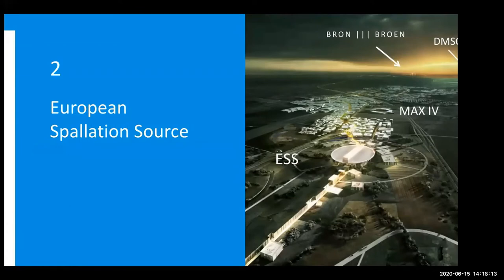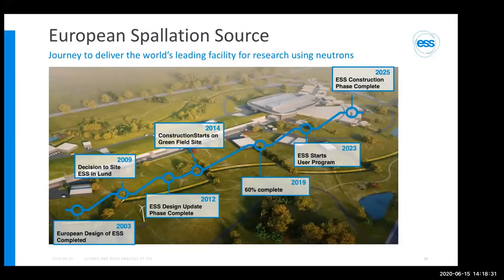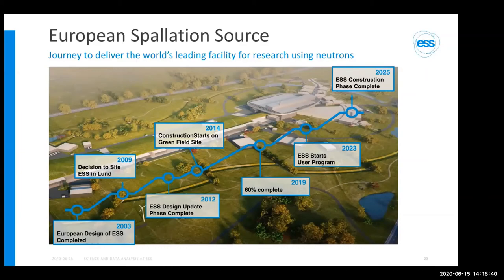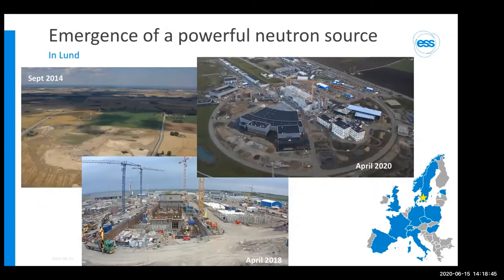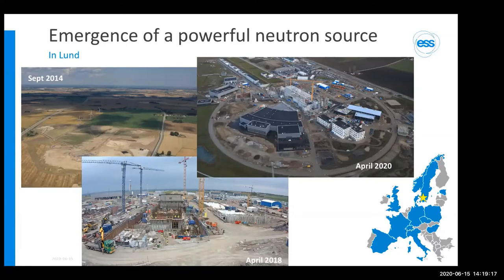At the European Spallation Source, next to MAX IV, we also have the Data Management and Software Centre in Copenhagen. ESS is shown here in a rendering of how it will look when fully constructed. Right now the buildings are appearing rapidly, as seen in an April photograph. In 2014 when construction started, there was a completely empty greenfield site. Now you can see the contours of the accelerator, the target building, and the experiment halls.